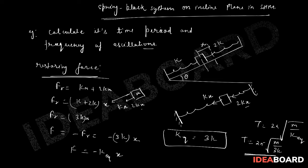If you want to find the frequency, it's given by f = 1/T. So frequency will be f = (1/2π)√(3k/m). That's the answer for frequency.